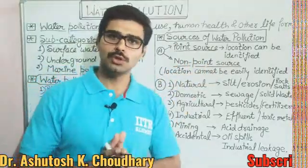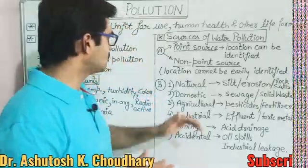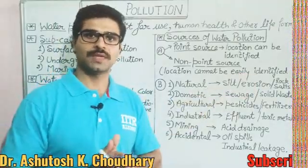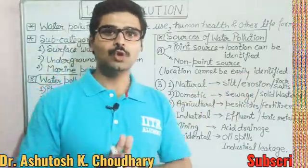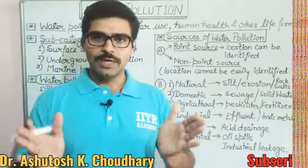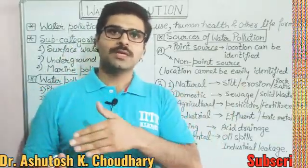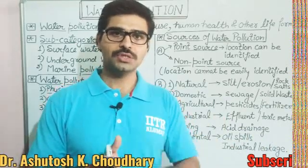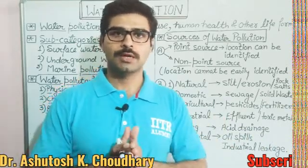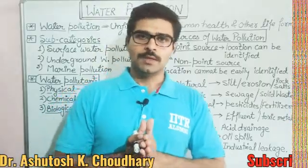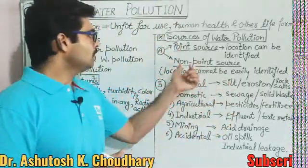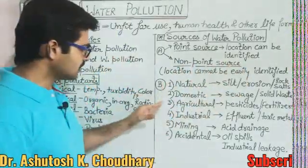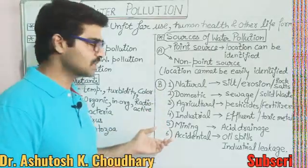Non-point sources are where it is not possible to easily locate the source. For example, if pollutants are scattered over a land area, all those pollutants reach the underground water table and pollute underground water. That is an example of a non-point source of water pollution.